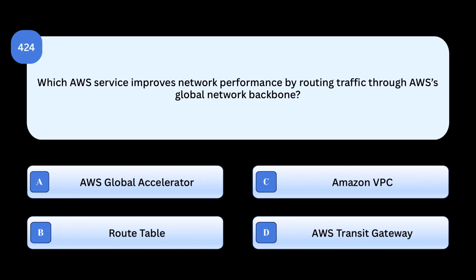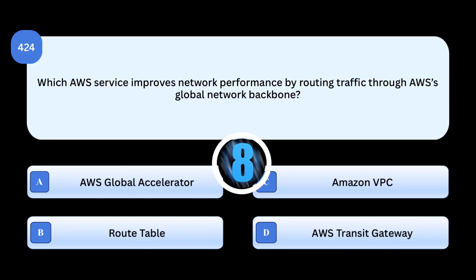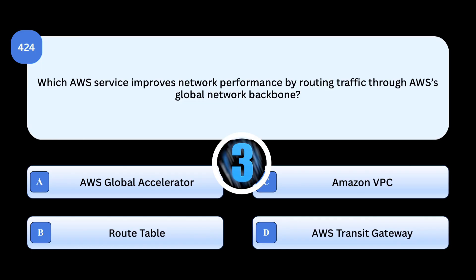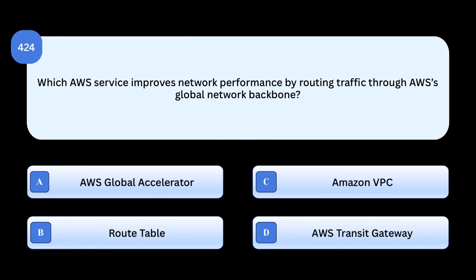Which AWS service improves network performance by routing traffic through AWS's global network backbone?